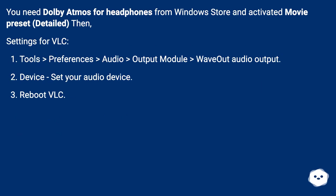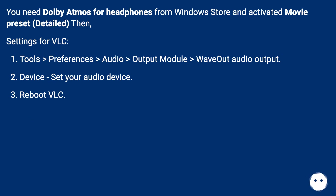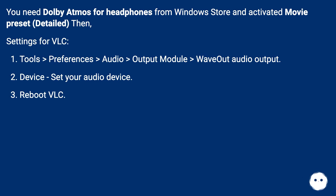You need Dolby Atmos for headphones from the Windows Store with the movie preset activated. Then for settings in VLC: Tools, Preferences, Audio, Output Module — set to WAVOUT audio output. Device — set your audio device.